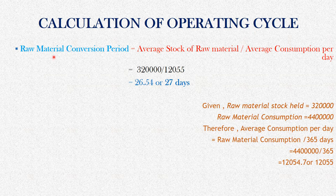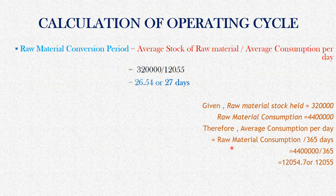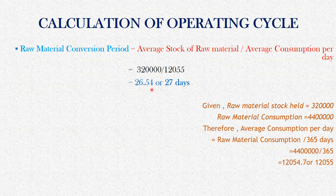First: raw material conversion period. The calculation formula is average stock of raw material divided by average consumption per day. Raw material consumption is Rs. 44,00,000 per annum. So, average raw material consumption per day equals raw material consumption divided by 365 days, which gives us approximately Rs. 12,055 per day.